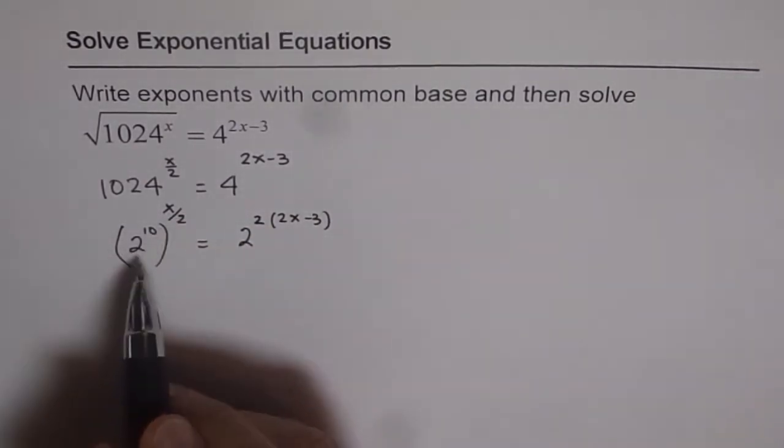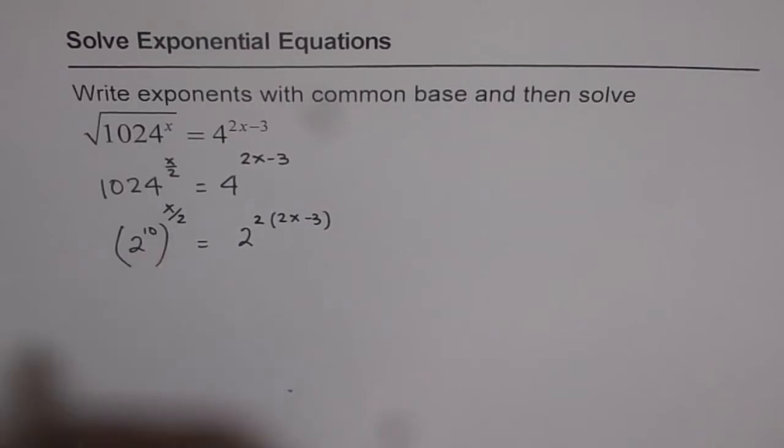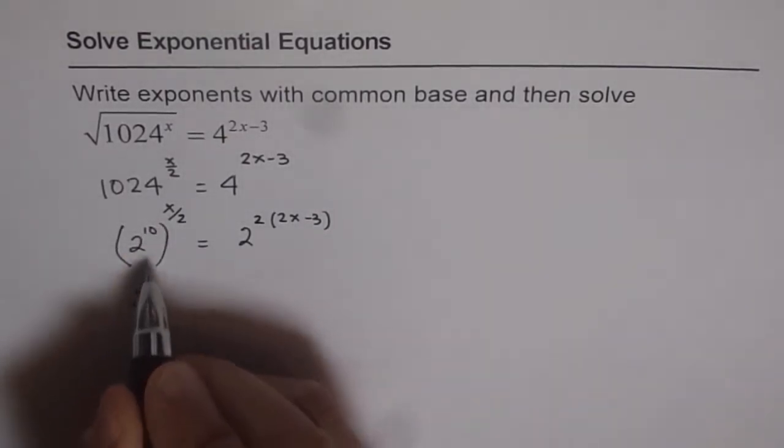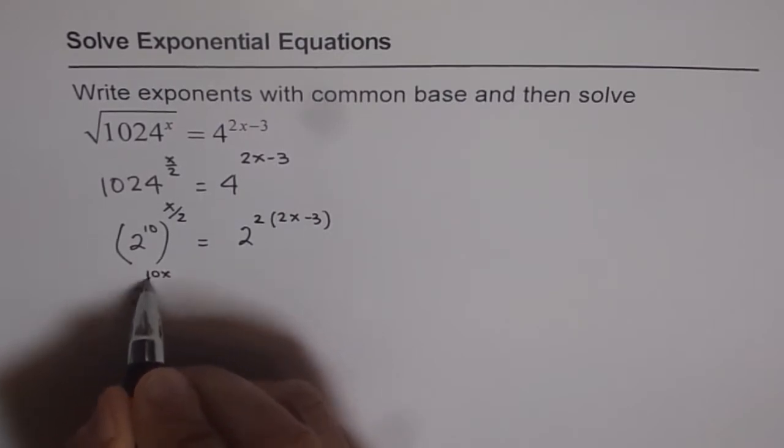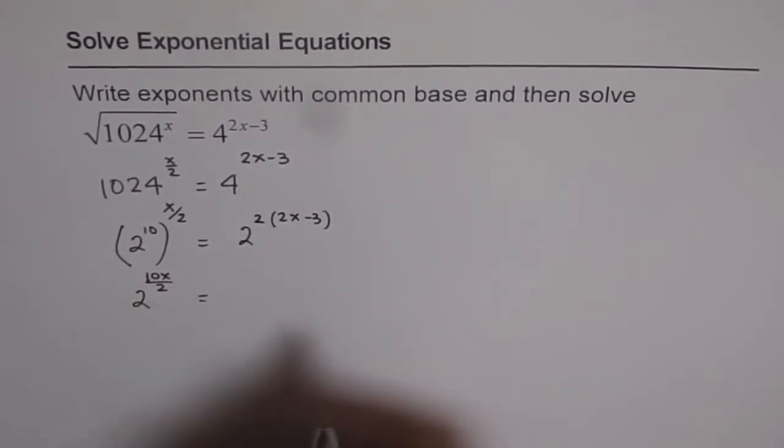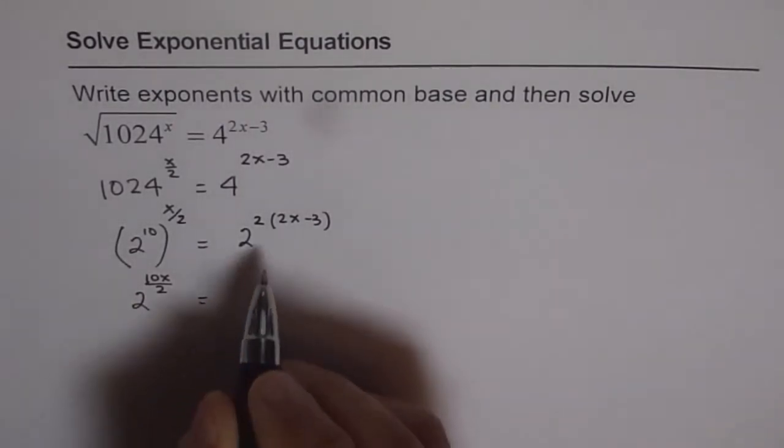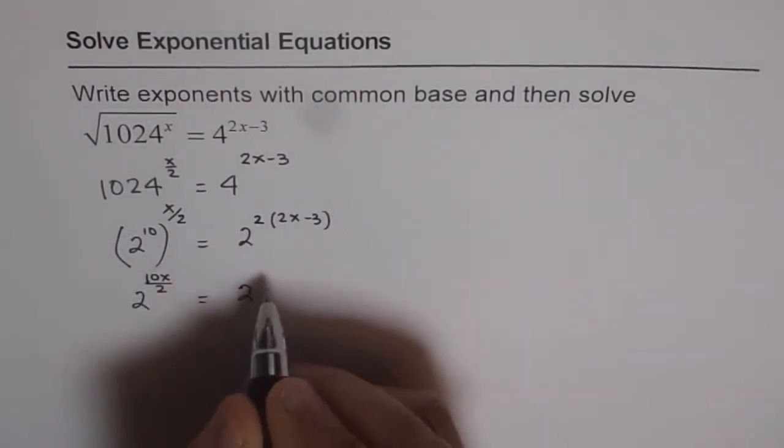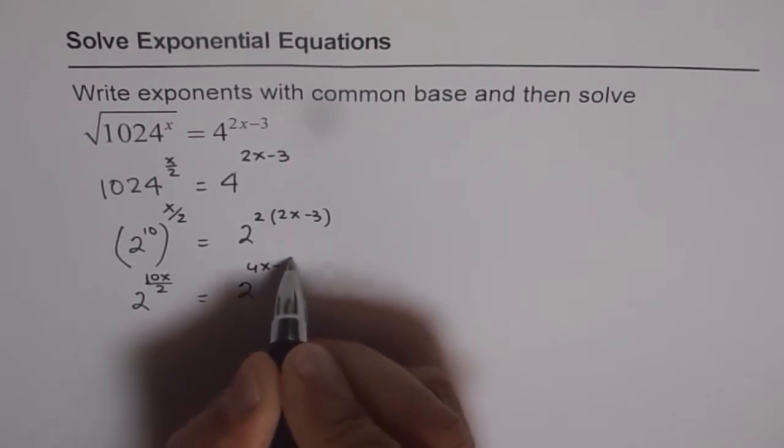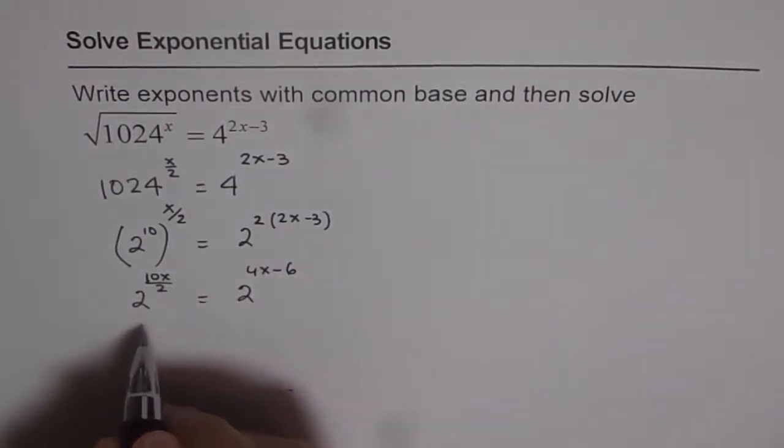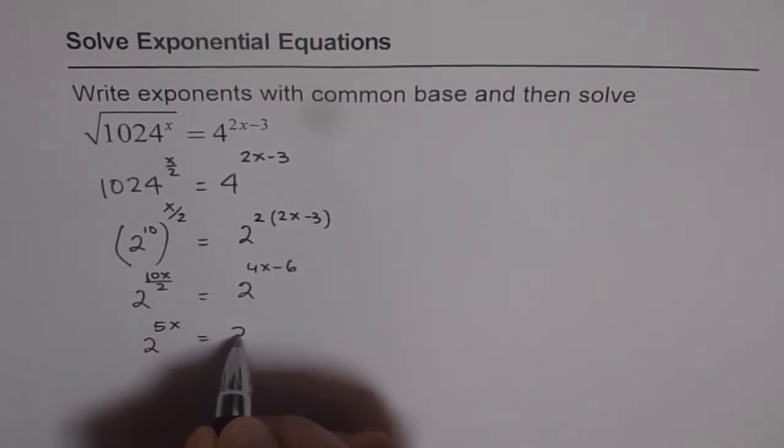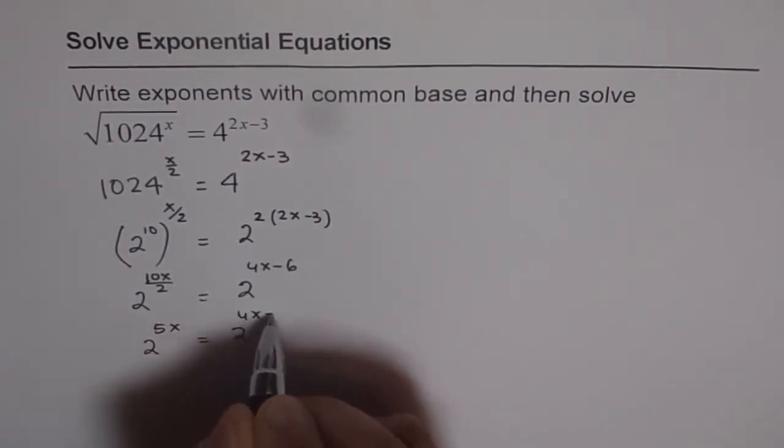Now if you simplify this using the power of power rule, then you get 2 to the power of—let me first write 10x over 2 and then simplify. And here we have 2 to the power of 4x minus 6. When we simplify the left side, we get 2 to the power of 5x equals 2 to the power of 4x minus 6.